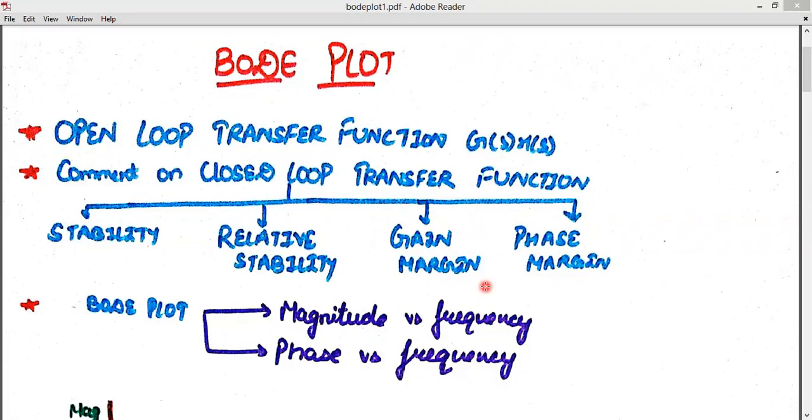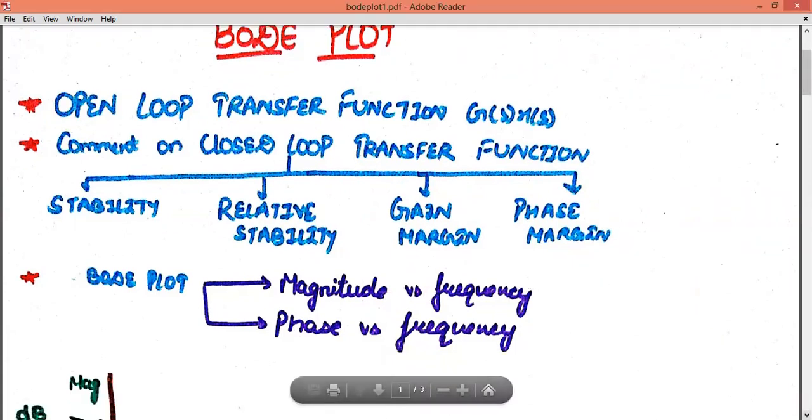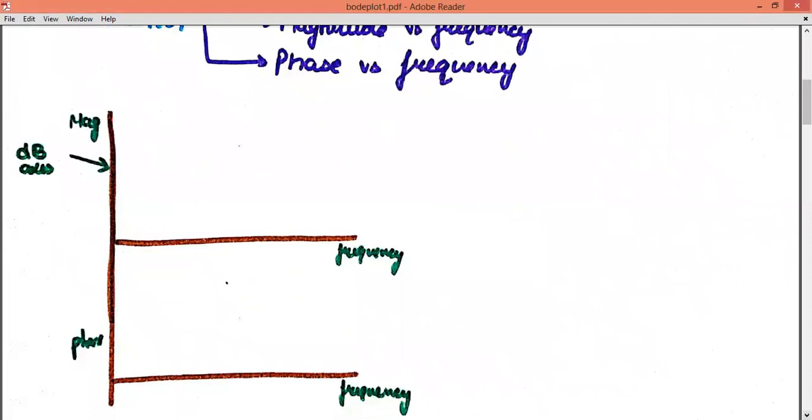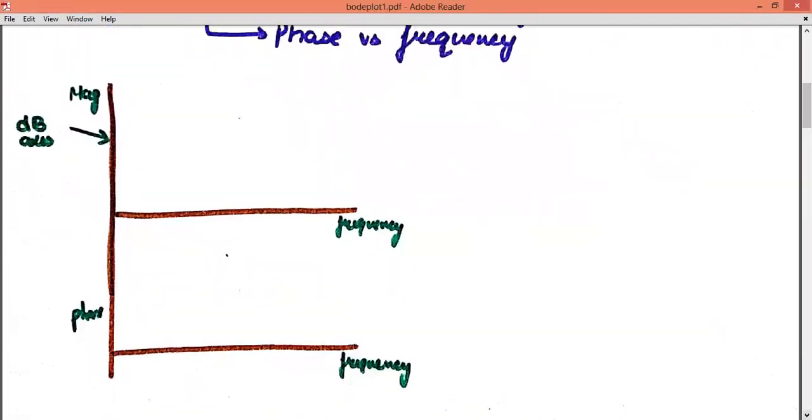Now see how Bode plot is basically made. Bode plot is made of magnitude versus frequency and phase versus frequency. These two graphs, when combined together, form our Bode plot. Something like this. The upper portion is magnitude versus frequency graph and this is phase versus frequency graph.